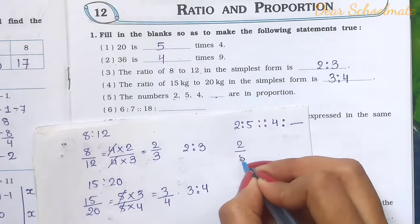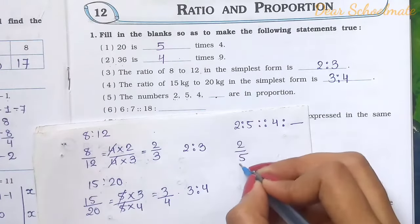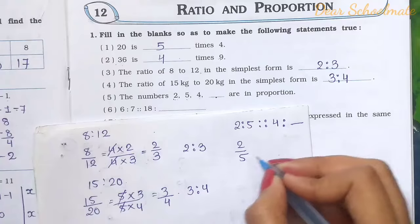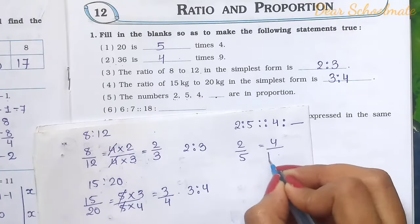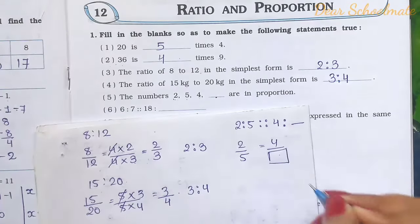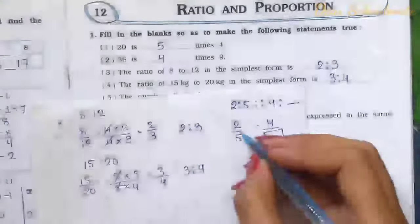We have 2 by 5 and need to find 4 by the missing number. Since 2 relates to 4 by multiplying by 2, we also multiply 5 by 2.